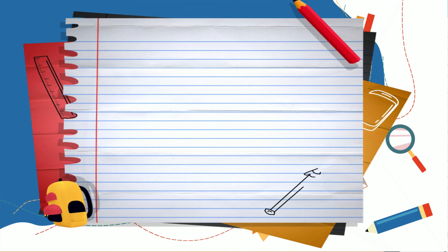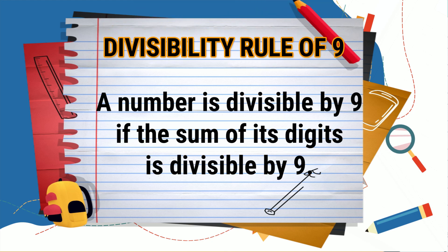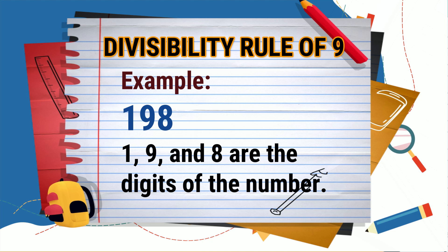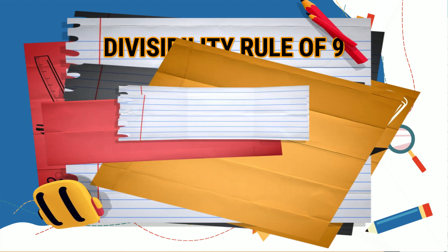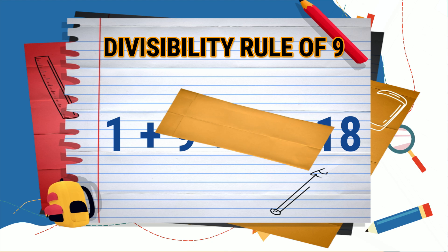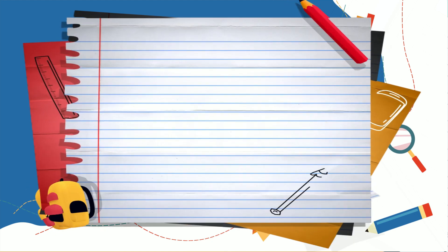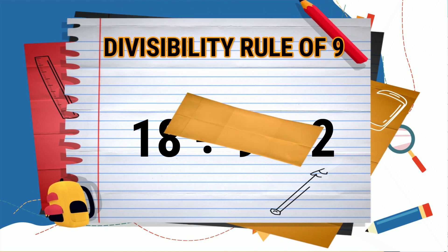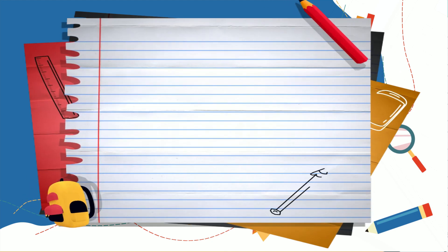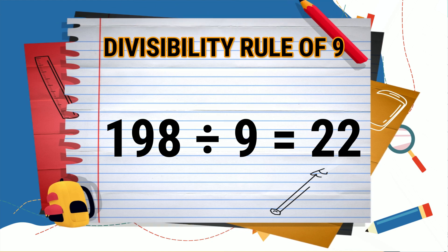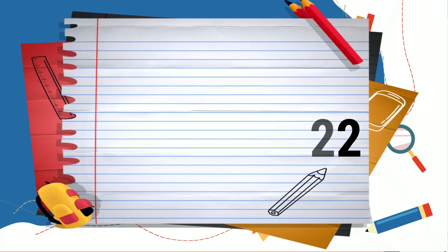Let's have this example: 1928. The digits are 1, 9, and 8. Let's add: 1 plus 9 is equal to 10, then plus 8 is equal to 18. Let's check if 18 is divisible by 9: 18 divided by 9 is equal to 2, the quotient has no remainder. Now let's divide: 198 divided by 9 is equal to 22, therefore 198 is divisible by 9.